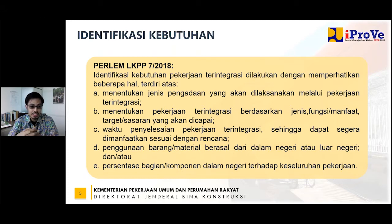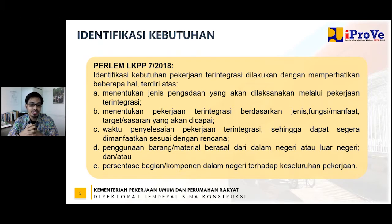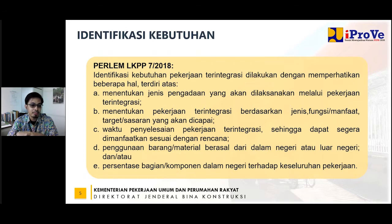Di dalam Perlem LKPP Nomor 7, salah satu tahapan dari perencanaan pengadaan dimulai dari identifikasi kebutuhan. Yang pertama adalah menentukan jenis pengadaan yang akan dilaksanakan melalui pekerjaan terintegrasinya. Di Perlem LKPP Nomor 7 sudah diatur ada identifikasi untuk pengadaan barang, identifikasi untuk pekerjaan konstruksi, identifikasi kebutuhan untuk jasa konsultasi, dan identifikasi kebutuhan untuk pekerjaan terintegrasi. Yang pertama adalah menentukan jenis pengadaan yang akan dilakukan secara terintegrasi. Kemudian kita harus bisa memetakan jenis, fungsi, dan manfaat atau sasaran target yang akan dicapai.